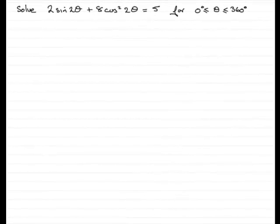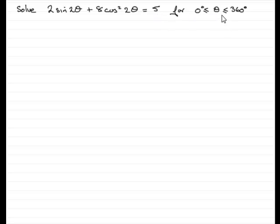Hi, welcome to this example on solving a trig equation. In this example we've got: solve 2sin(2θ) + 8cos²(2θ) = 5 for θ between 0 and 360 degrees inclusive.